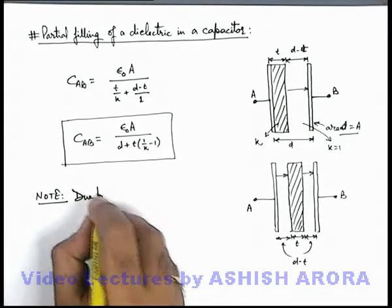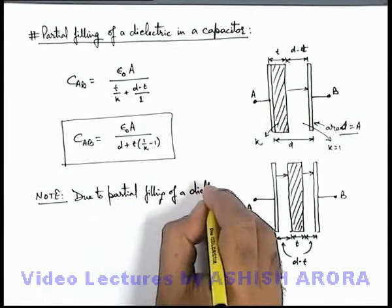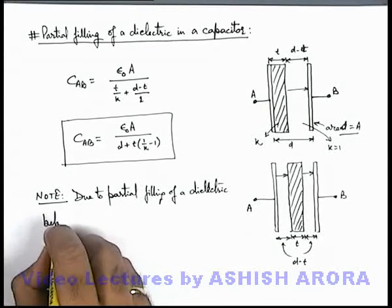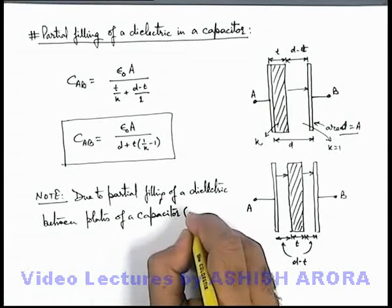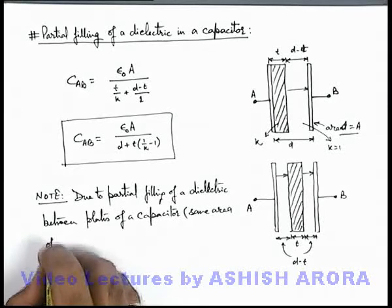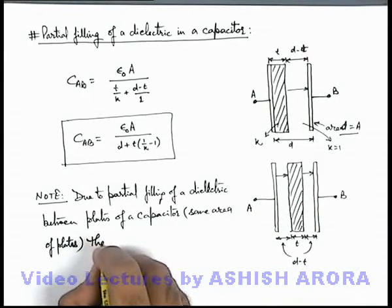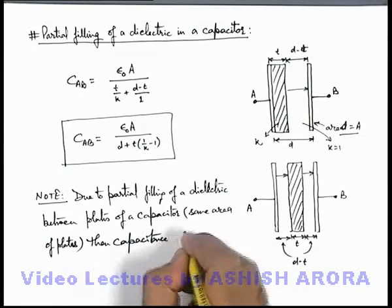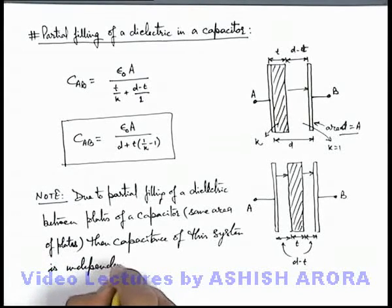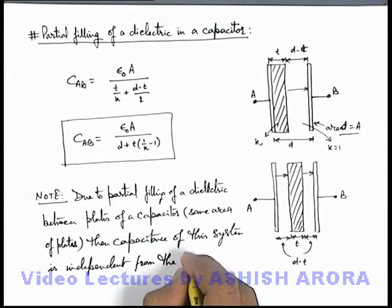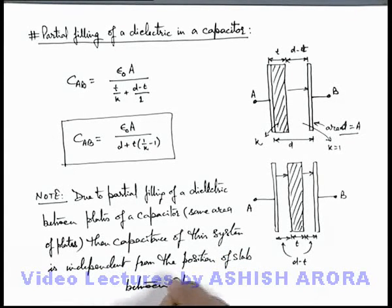Note: Due to partial filling of a dielectric between plates of a capacitor with same area of plates, that means the area of dielectric has to be the same as that of plates, then capacitance of this system is independent from the position of slab between the plates.